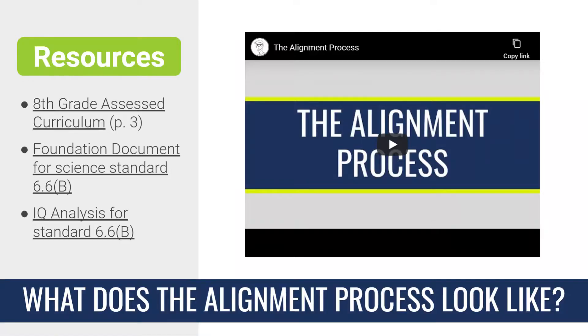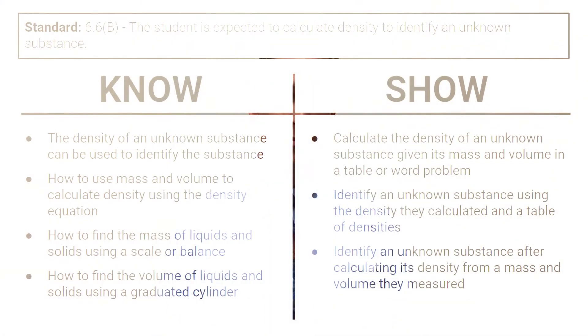On a previous slide, I showed you the specific resources that I used to go through the alignment process for Science Standard 6.6. Now that I've finished that process, I'll use what I've learned to create a no-show table to summarize exactly what students need to know and do for this standard. Here is the no-show table for Standard 6.6.